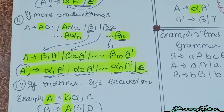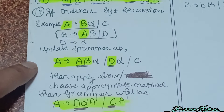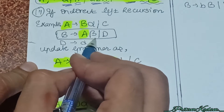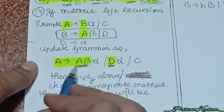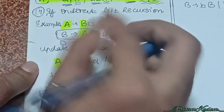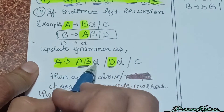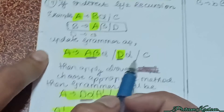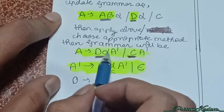Now let us check for indirect left recursion. We have a grammar like A → Bα | c, and B → Aβ, which is indirect recursion. We have to update by substituting A's production into B — so we put Bα in place of B in A's first production, giving us the expanded form, and c remains as it is.